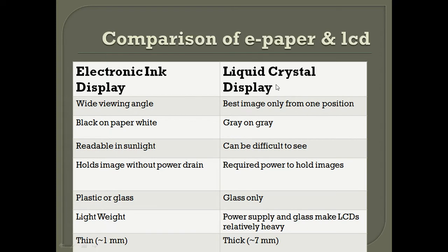Comparing e-paper with LCD: e-paper has a wide viewing angle while LCD provides the best image from only one direction. E-paper displays black on white, is readable in sunlight, and holds its image without power drain, whereas LCD requires constant power to hold images. E-paper may be plastic or glass, is lightweight and thin, while LCD uses glass and a power supply, making it relatively heavier and thicker than e-ink displays.